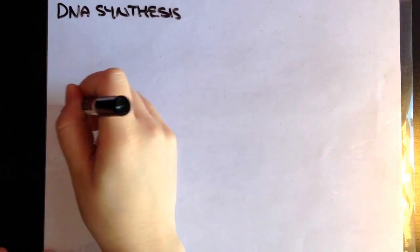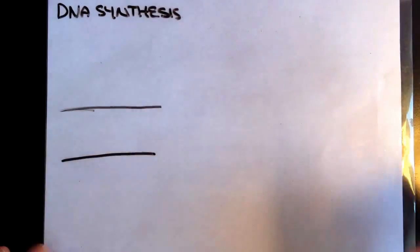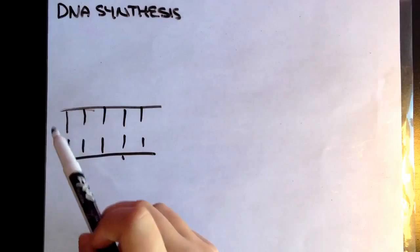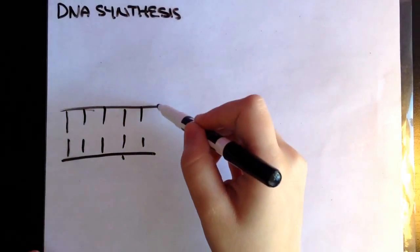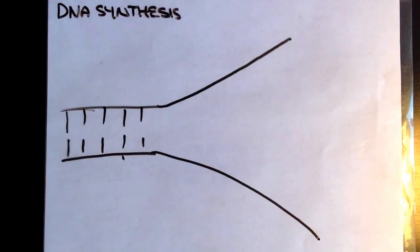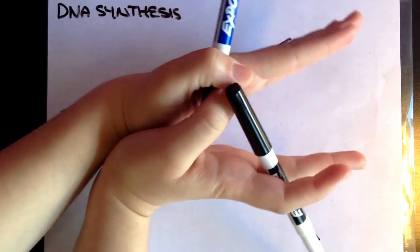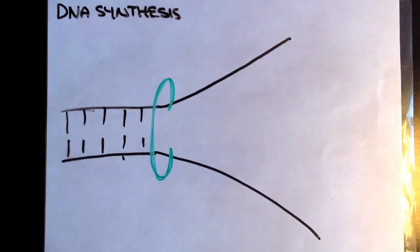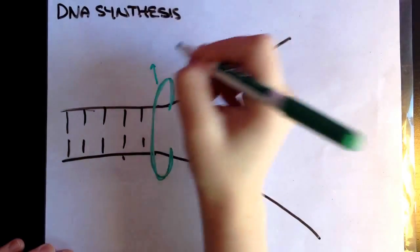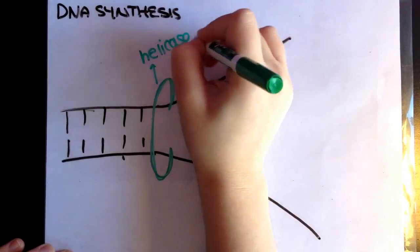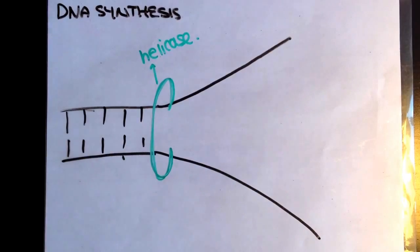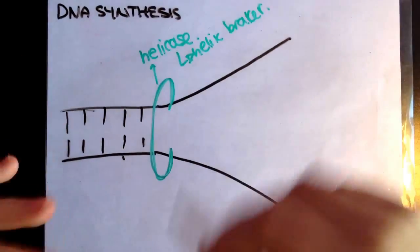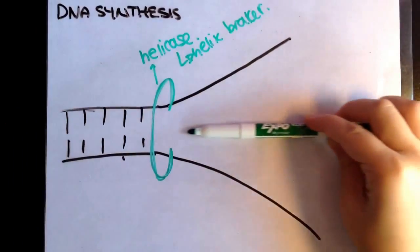Imagine I have my DNA helix. I've got my base pairs going on here. When I'm synthesizing, the helix has to open up. What opens it up is a little clamp structure — that is called a helicase. A helicase is basically a helix breaker. It's coming through and breaking open the helix.